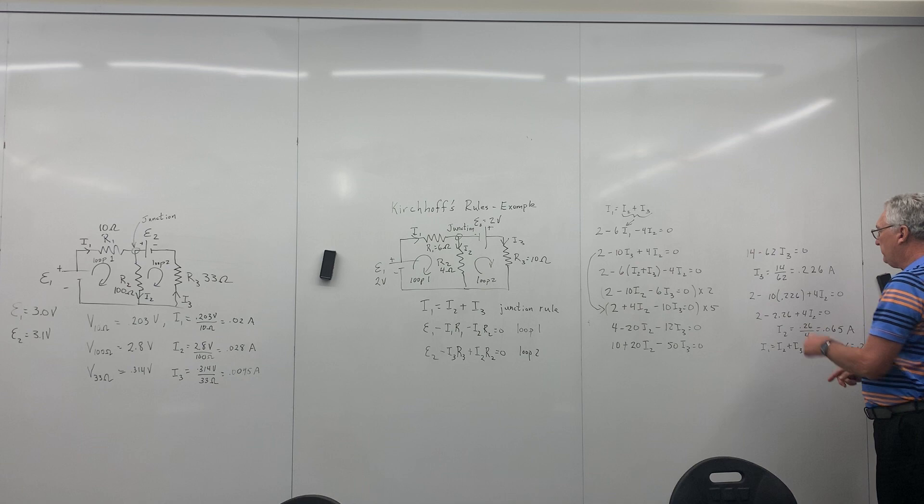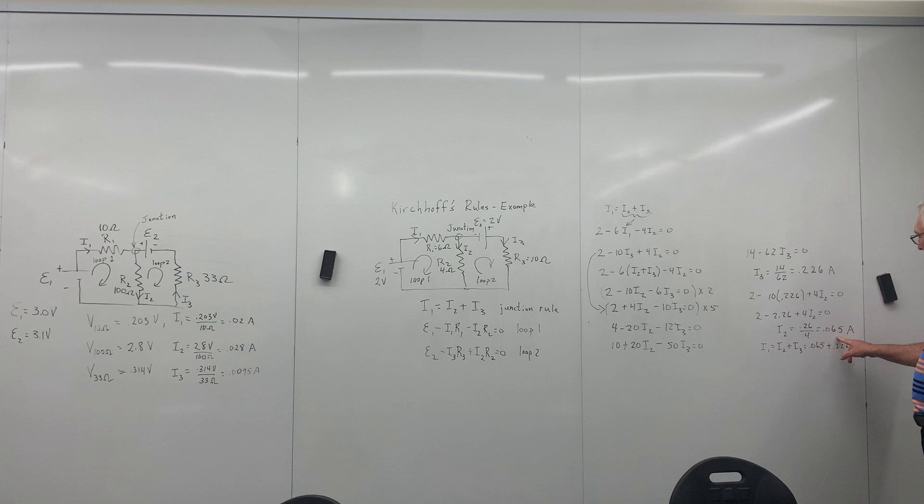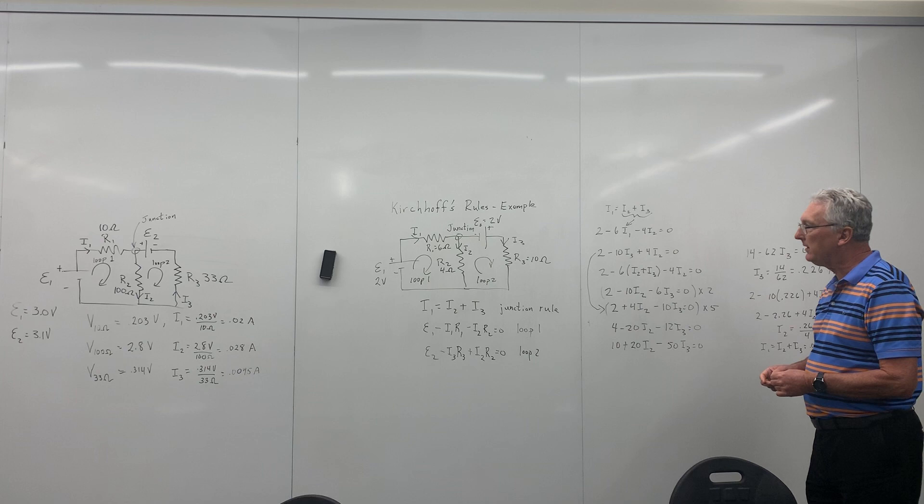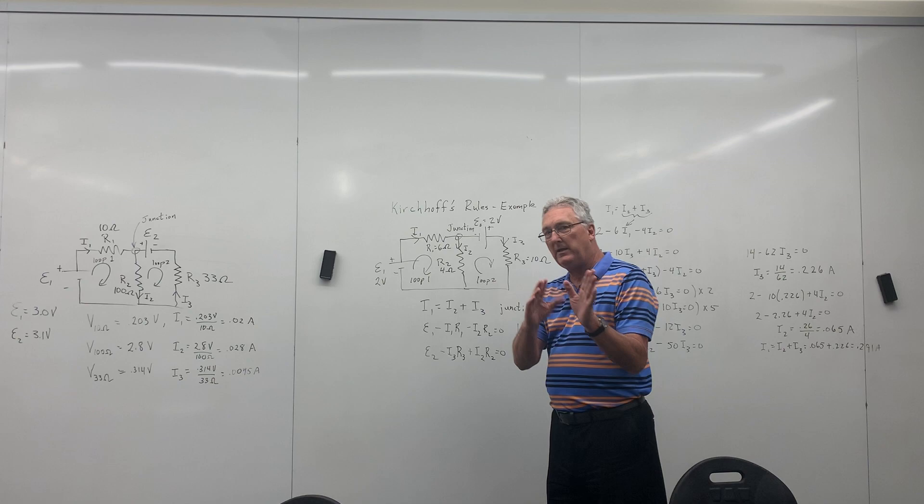Then I just plug that value in here. 2 minus 10, 10 times 0.226 plus 4I2 equals zero. Solve for I2, I get 0.065. And then go back to this equation here. Add 0.065 plus 0.226 and get 0.291 for that current. So that's basically what you're going to do using different numbers.